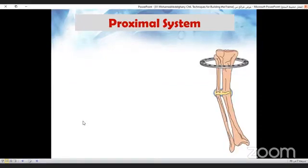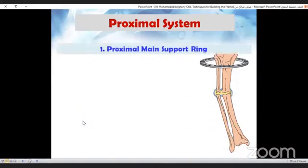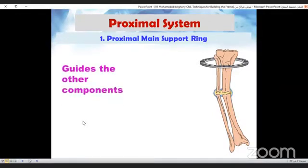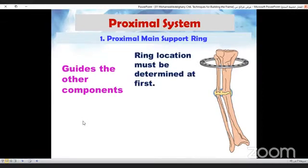The first ring is the proximal main support ring or the guide ring. It guides the other components, so its location must be determined at first using the C-arm.